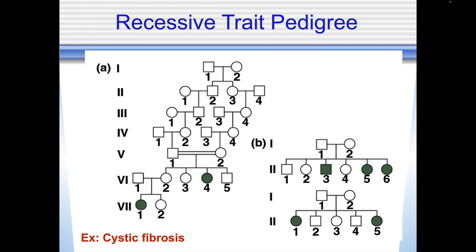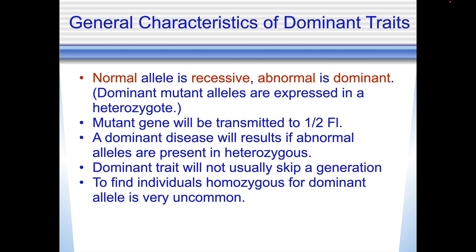When looking at pedigrees, you might be asked whether individuals in generation five, one and two are homozygous or heterozygous for this trait. Based on the pedigree, you'd have to say they must have been heterozygous.